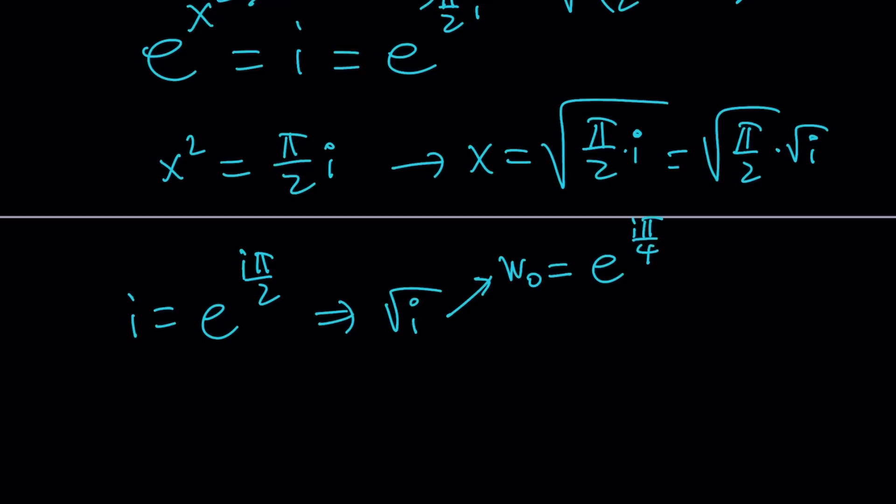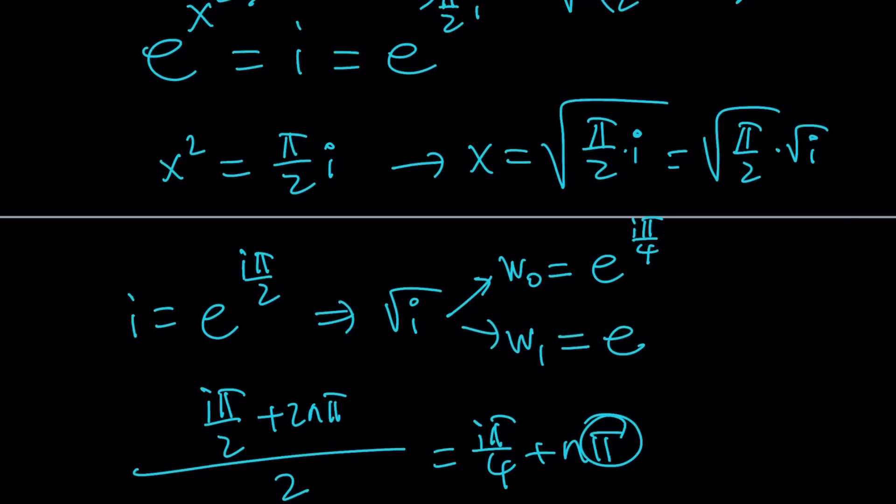But I also need to consider this i pi over 2 plus 2n pi, and when you divide it by 2 you're going to get i pi over 4 plus n pi. In other words, if you're finding these complex square roots you have to add pi to the first solution. So pi over 4, let's call that w sub 1, it's going to be i times 5 pi over 4. If you want you could write it as pi over 4i and the second one as 5 pi over 4i.